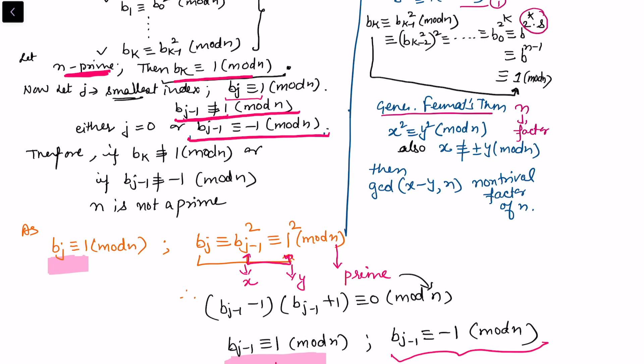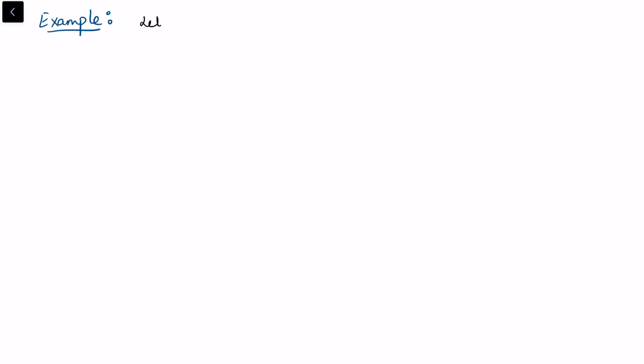If j equals 0, we cannot draw a definitive conclusion and the test remains inconclusive — this is why we call it a probable prime test rather than a definitive test. To summarize: if bₖ is not congruent to 1 mod n, or bⱼ₋₁ is not congruent to -1 mod n, we conclude n is not prime.